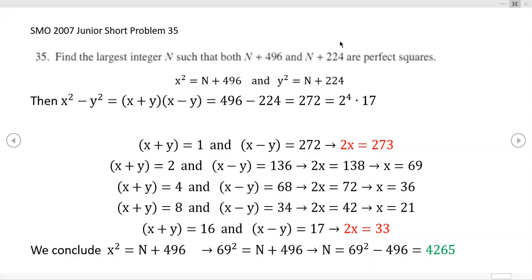This one falls definitely into the category of just directly translating. I simply set both expressions equal to perfect squares. Something I did leave out right here is that X and Y are proud members of the natural numbers. This is supposed to be a fancy N here.